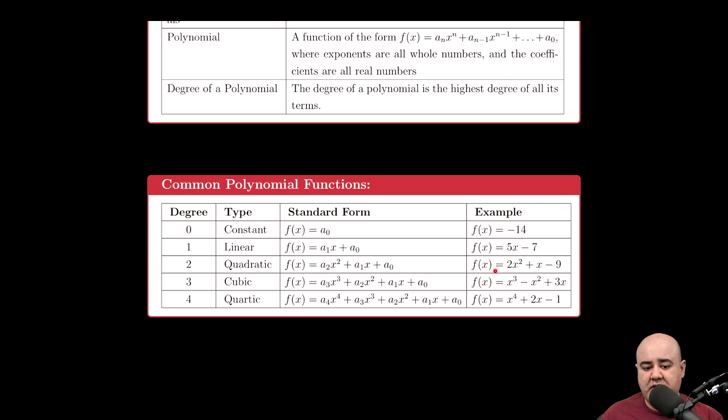However, the x term was necessary in order to call it a linear function. Similarly, in order to call something a quadratic, it would still be quadratic if the x and the negative 9 walked away. So if we just had y equals 2x squared, that is still a quadratic function. However, if we just have x minus 9, and the 2x squared vanishes, then it's no longer quadratic.